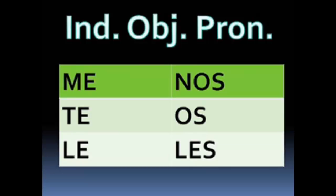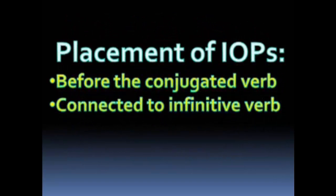You may be wondering what all this has to do with gustar. We're going to use these to say to whom the apples are pleasing, to whom the beets are not pleasing, etc. Now where we put these indirect object pronouns does matter. Me, te, le, nos, os, les usually go before a conjugated verb or connected to an infinitive verb. There are some other instances like command form where this doesn't apply, but generally speaking they go before a conjugated verb or connected to an infinitive.